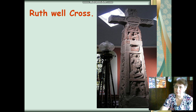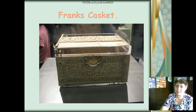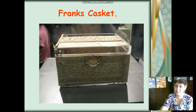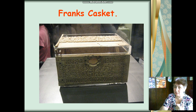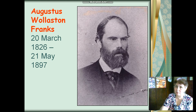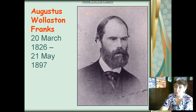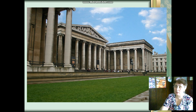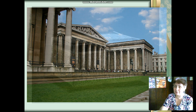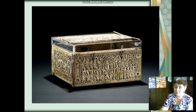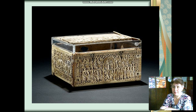Another monument is Franks Casket, which was found in France. The word 'Franks' in the title is not because it was found in France — the reason is this person: antiquary Augustus Wollaston Franks. He owned this casket and presented it to the British Museum. You can see the casket in that museum in London. As you can see, the casket is covered with runic inscriptions and pictures. It is not very big: 19 cm wide, 23 cm in length, and 10 cm in height.